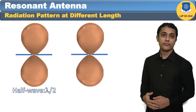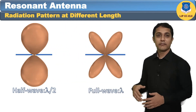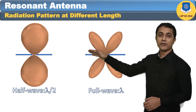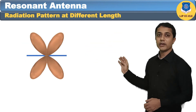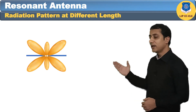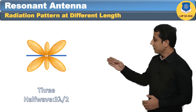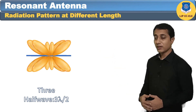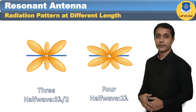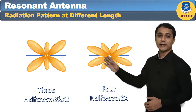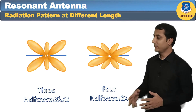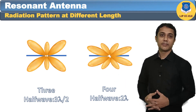For lambda by 2, we get a radiation pattern in the shape of a figure-8. When we further increase the length to lambda, the main lobe is split into two, giving us 4 main lobes. When we further increase the length from lambda to 3 lambda by 2, side lobes occur at the center. Further increasing the length to 2 lambda (4 lambda by 2) causes the center side lobes to again split into two. This shows how increasing the antenna length produces variation in the radiation pattern.